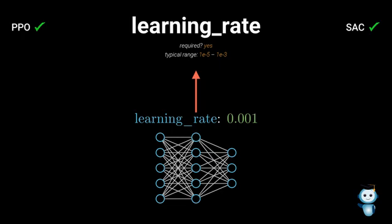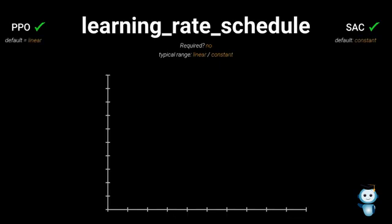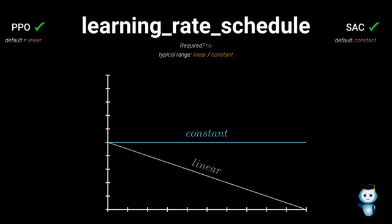Let's continue with the learning rate schedule. The value of the learning rate can either stay constant or decrease linearly to zero. If you have an environment that changes a lot, or an agent you want to train continuously, I'd recommend using a constant learning rate. Otherwise, I'd use a linear learning rate, which should result in better and more stable training. Please note that SAC is not designed for a linear learning rate and should therefore always be used with a constant learning rate.